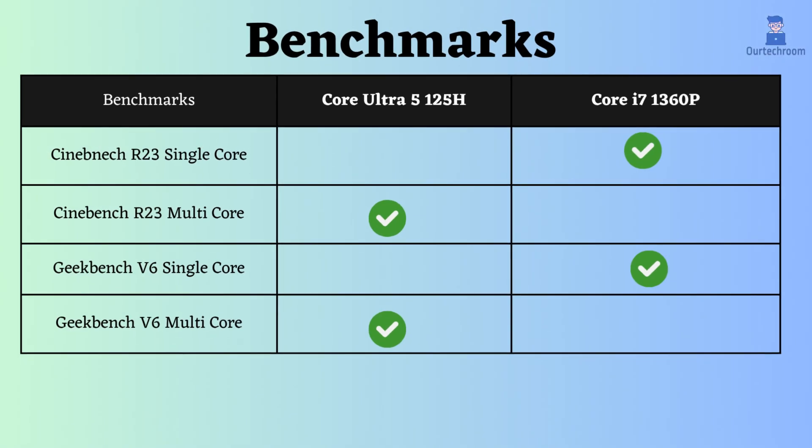Looking at benchmark comparisons, for single-core performance in Cinebench R23 and Geekbench V6, the Core Ultra appears better, but in multi-core performance, the Core i7-1360P appears to be better.